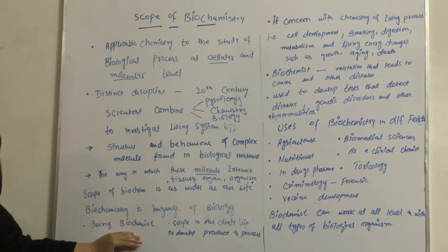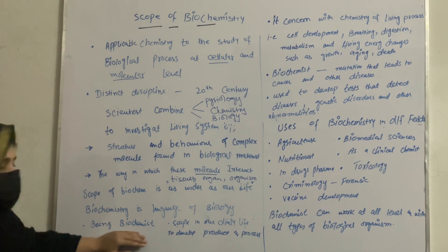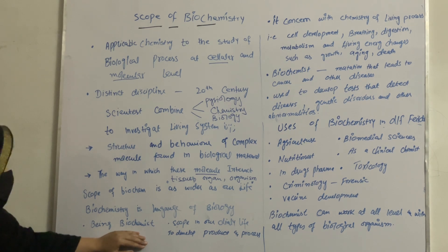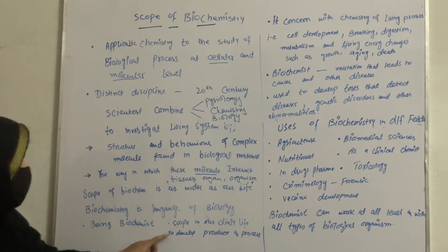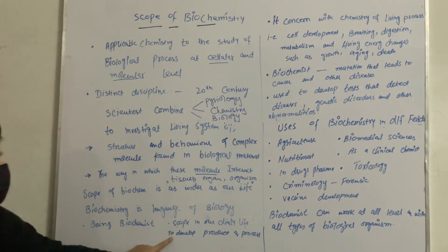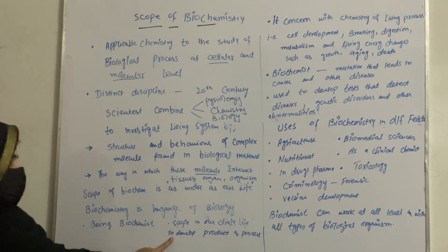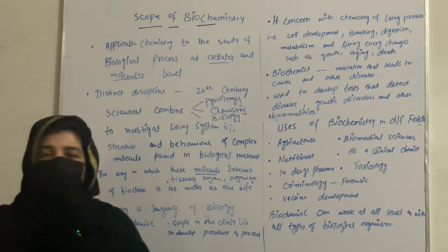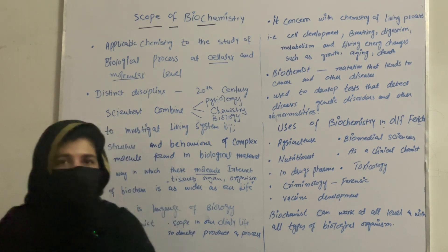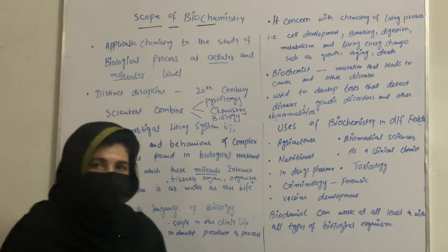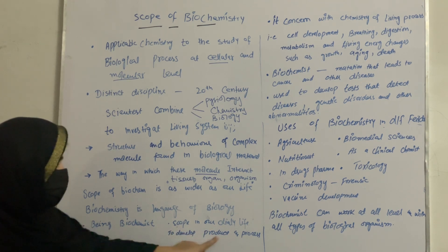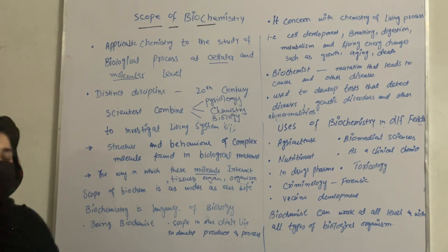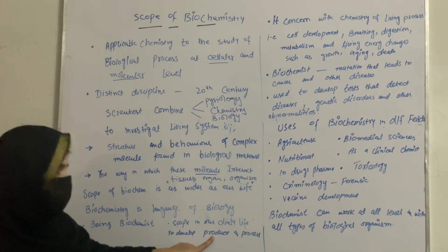As a biochemist, we can study the chemical processes and changes that occur in a living system. Biochemistry is mainly concerned with all those processes and changes occurring in living organisms. In terms of scope in daily life, biochemistry is mainly concerned with the production and processes involving all those chemical changes which occur in a living organism.